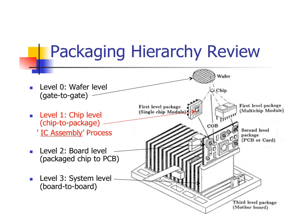As a review of the various levels of packaging, the IC assembly process occurs after singulating the chips from the wafer. We call this the first packaging level. This is traditionally because this is where the chip or die is mounted into its protective package.